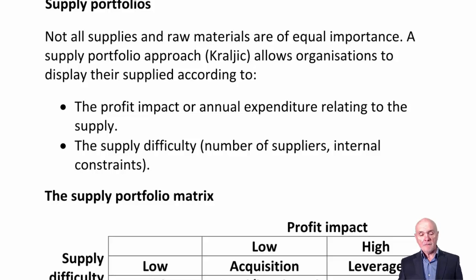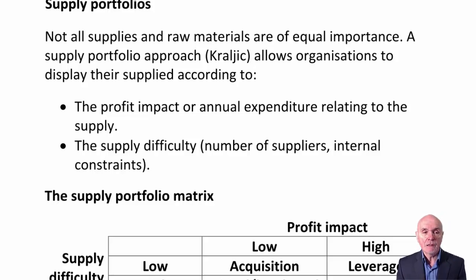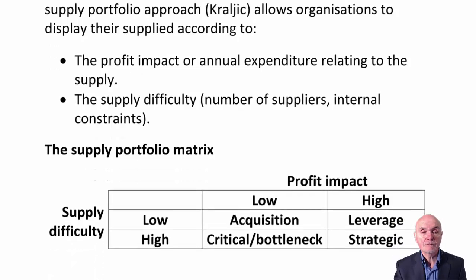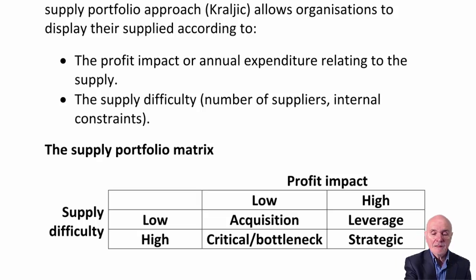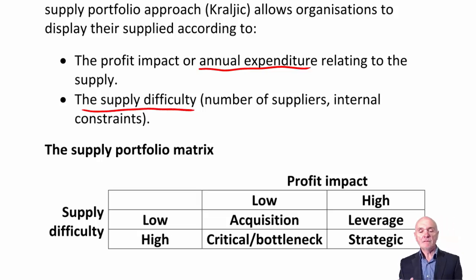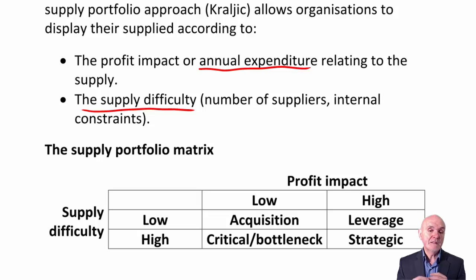Supply portfolios are about making decisions about how we should get supplies. Not all supplies and raw materials are of equal importance or equal seriousness. This portfolio approach considers the profit impact or annual expenditure related to the supply — how material the supply is — and the supply difficulty: are there many suppliers who can easily send us goods, or are we dealing with a monopolistic situation where there's only one supplier with limited capacity?